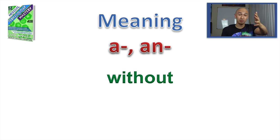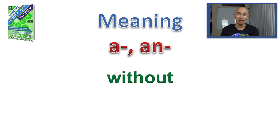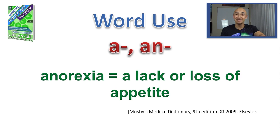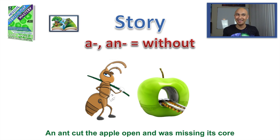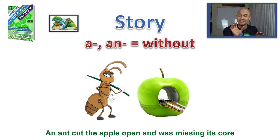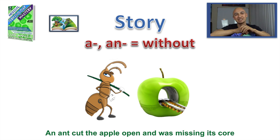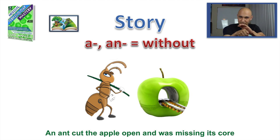The first prefix is A or AN, which means 'without.' A word used for this is anorexia, meaning a lack or loss of appetite. As we go through this series, I'll be using predetermined images from A through Z — for example, an apple represents A, an elephant represents E. So the story is: an ant cut the apple open and it was missing its core. That gives the trigger that A or AN means without — it didn't have its core, so it was without its core.